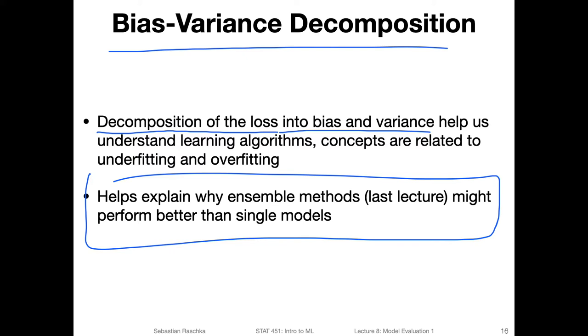When people say in practice a model has high bias, this usually refers to the bias of the loss. And when people say a model has high variance, that usually refers to the variance of the loss.